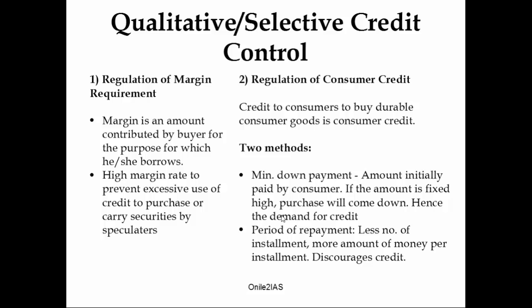The second method is regulation of consumer credit. Credit given to consumers to buy durable goods is called consumer credit. Under this there are two methods. First is minimum down payment — the amount initially paid by the consumer to buy durable goods. If the initial down payment is fixed at a very high rate, customers are generally discouraged from purchasing, so the demand for credit goes down. With period of repayment, if the number of installments are low, the amount per installment goes high, again discouraging credit and controlling inflation.